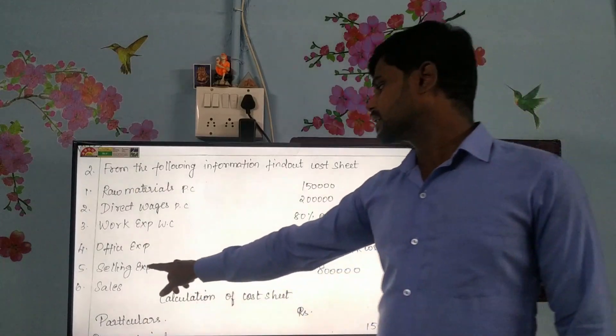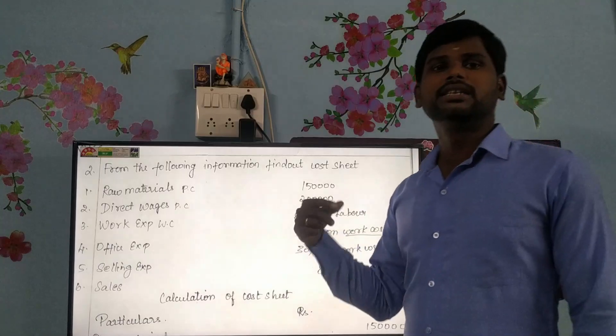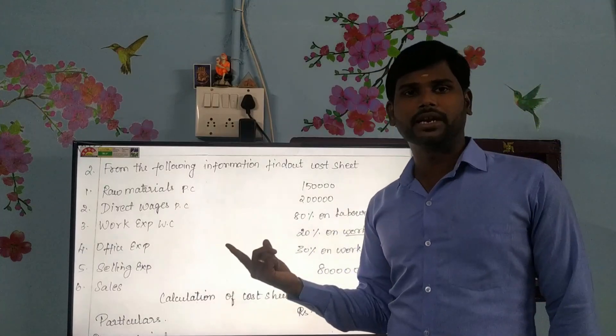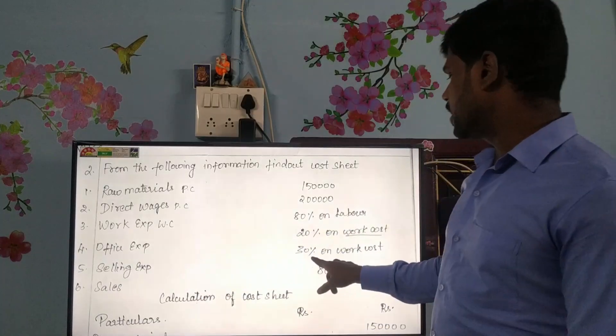Next, selling expenses — that is selling and distribution overhead.